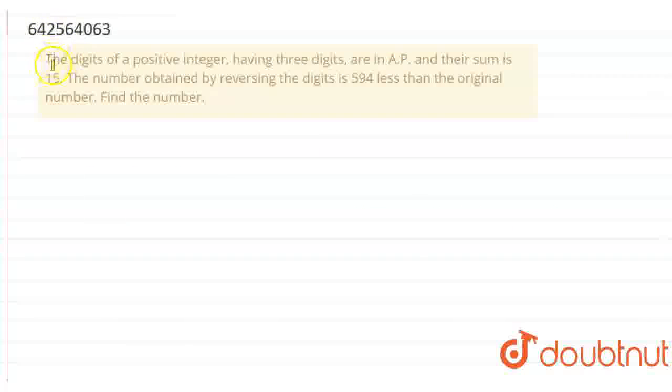Hello everyone. So the question is, the digits of a positive integer having 3 digits are in AP and their sum is 15.